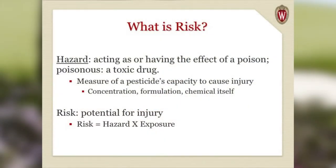Before we can reduce risk, we have to identify what risk is. Almost everybody in this room should be certified in Category 3.0 in the state of Wisconsin for applying pesticides. The Department of Ag, Trade, and Consumer Protection defines risk as having two components. The first is hazard — really, the toxicity of a compound. How toxic is that compound? There are different compounds we apply that have different levels of toxicity.